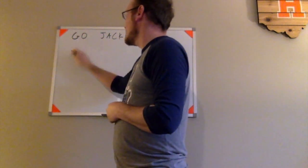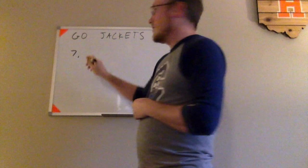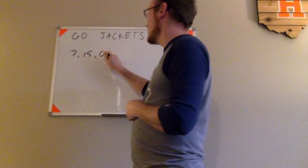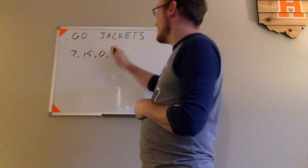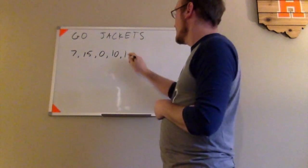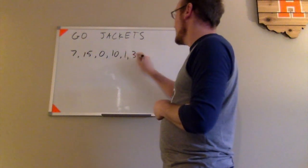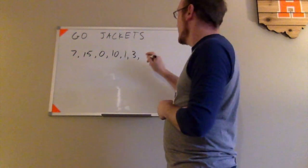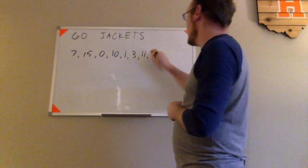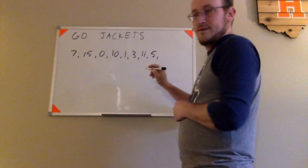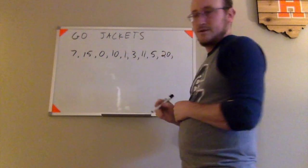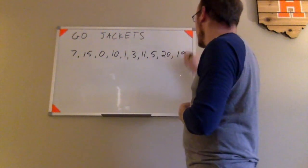G would be 7, O would be 15, the space would be 0, J would be 10, A would be 1, C would be 3, K would be 11, E would be 5, T would be 20, and S would be 19.